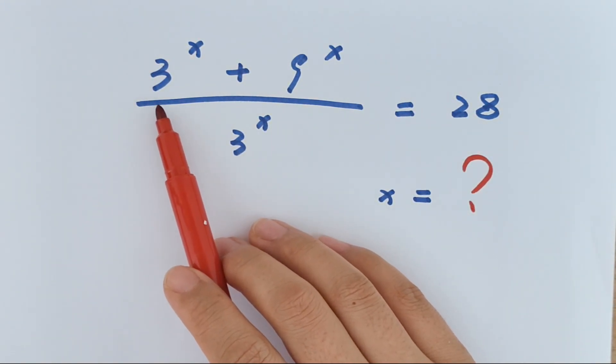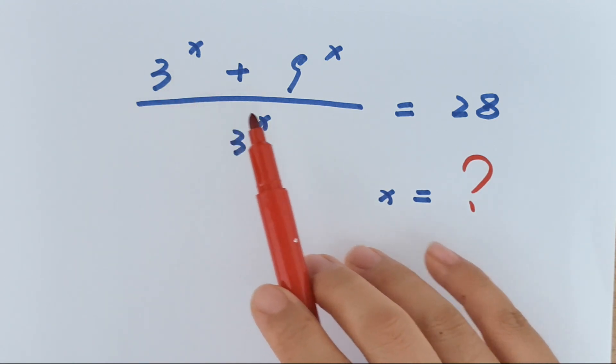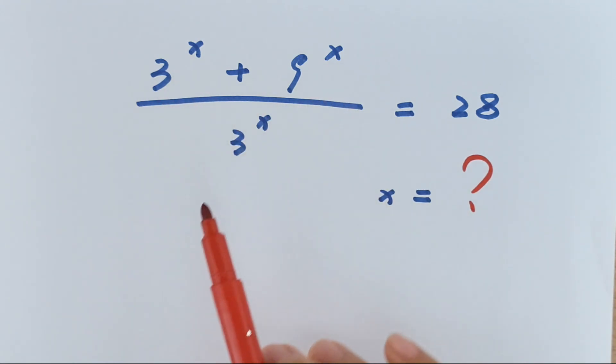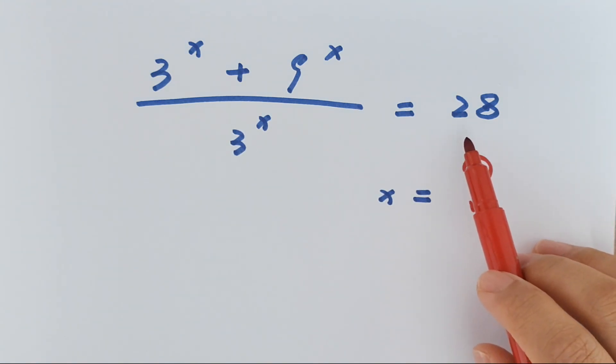How to solve 3 to the power of x plus 9 to the power of x divided by 3 to the power of x equals 28 to find the value of x.